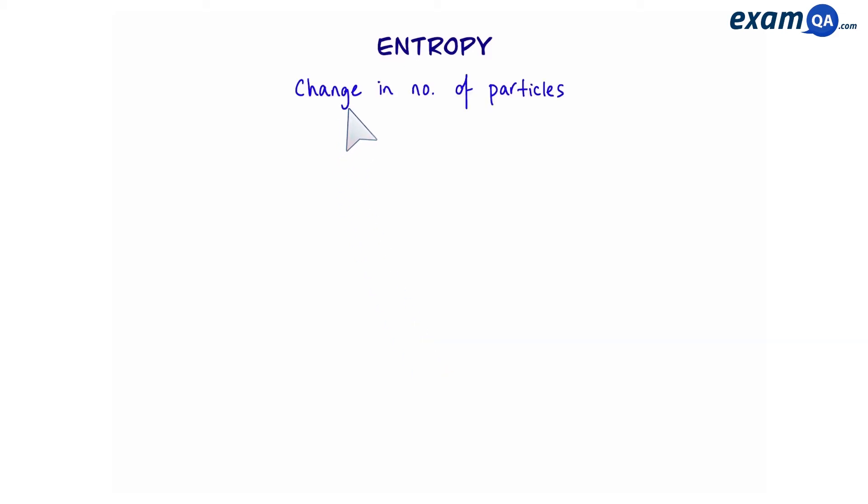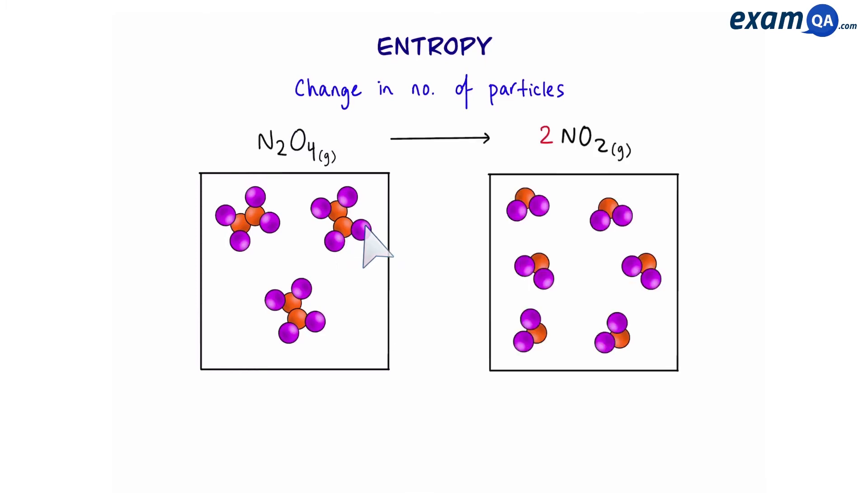Another factor is change in the number of particles. Here we have a substance. We can see that each molecule has two atoms of nitrogen bonded to four atoms of oxygen. This breaks down to give us two molecules of nitrogen dioxide. So as we can see on the left we have three particles, on the right those three particles have broken down into six particles.